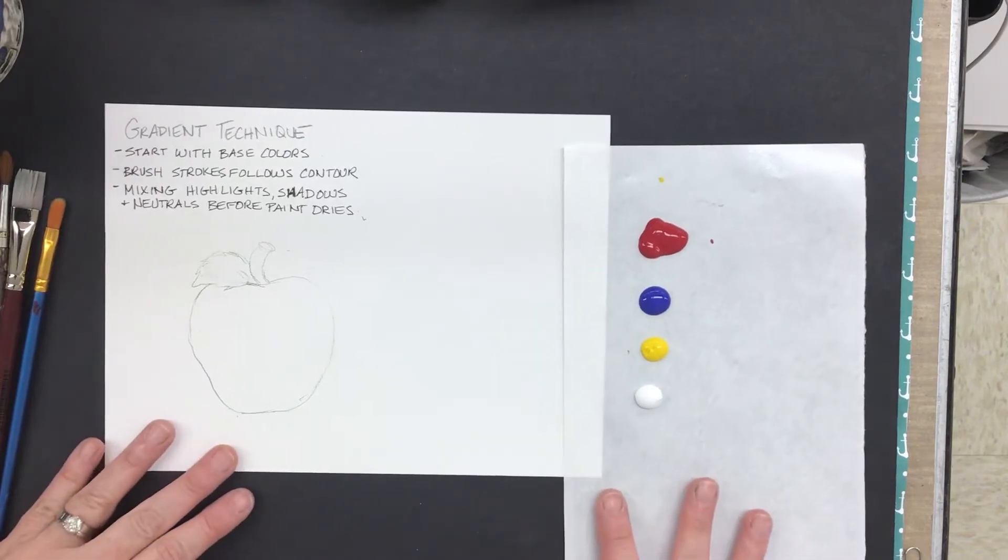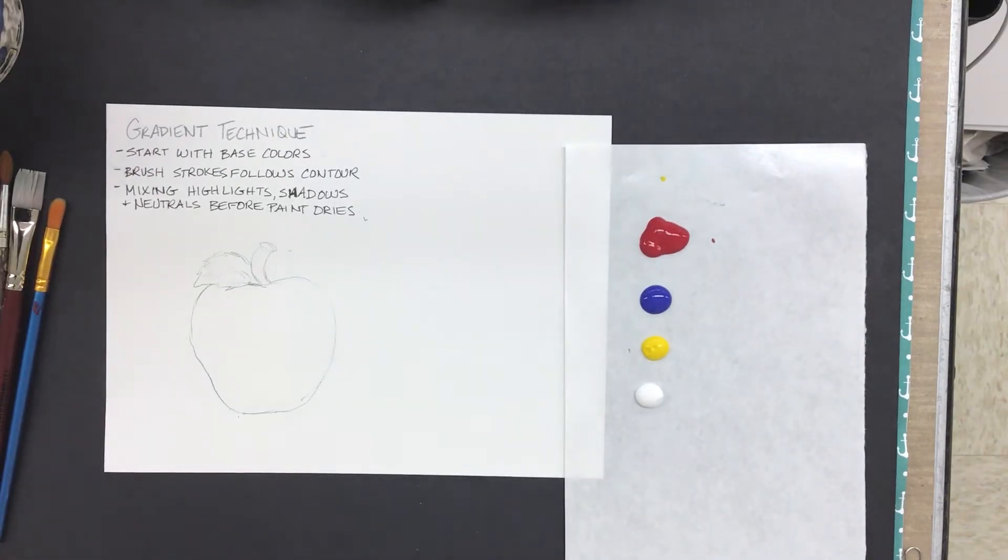All right, so for this technique we are going for a smooth paint application with gradual progressions from lights to darks and cools to warms. So I'm going to start with a base color.